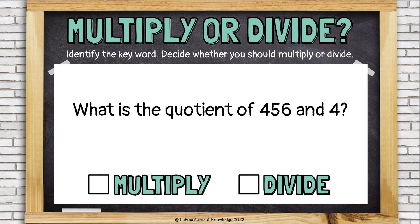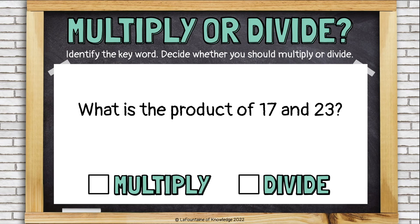What is the quotient of 456 and 4? Quotient — that's a funny sounding word. Quotient is actually what you call the answer to a division problem. So if you're finding a quotient, you're always going to be dividing.